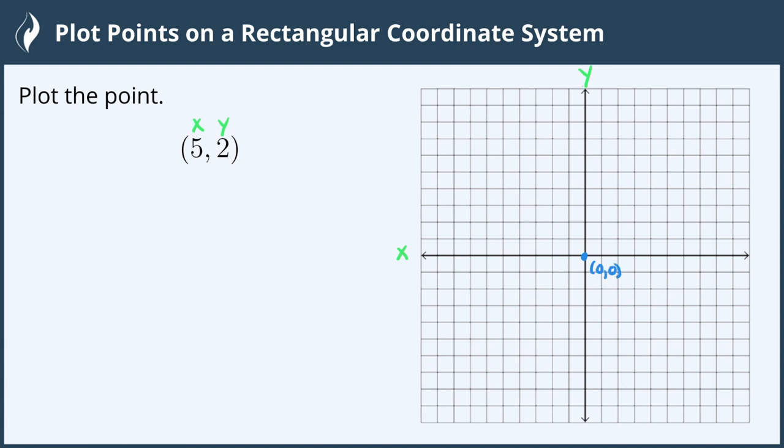To the right of the origin the x-axis is positive. So positive 1, positive 2, positive 3, positive 4 and so forth.